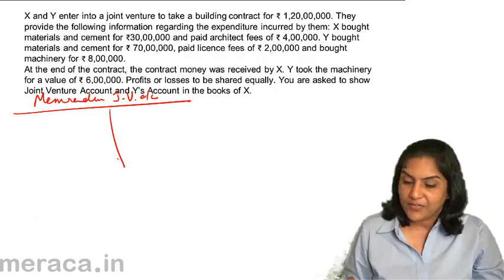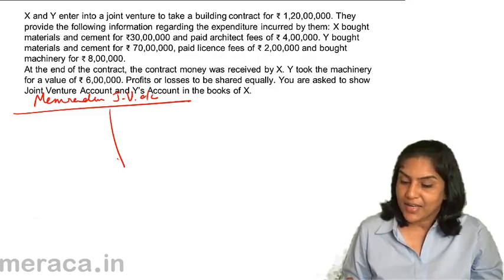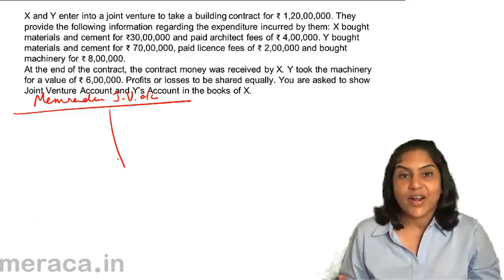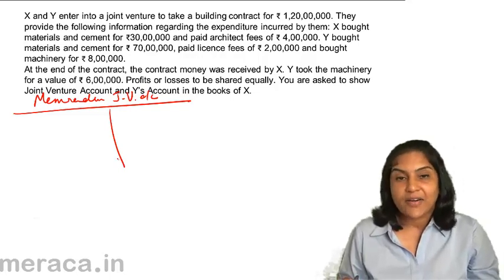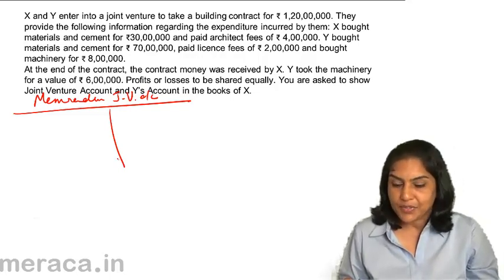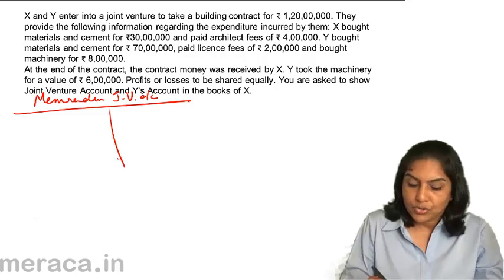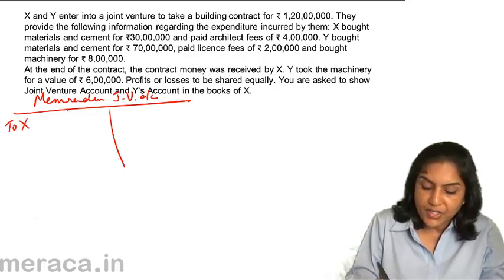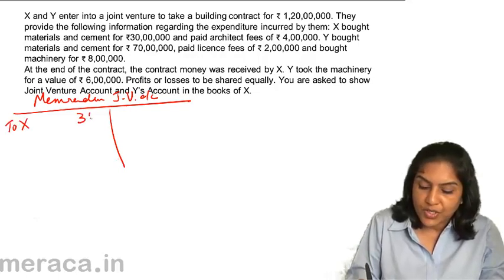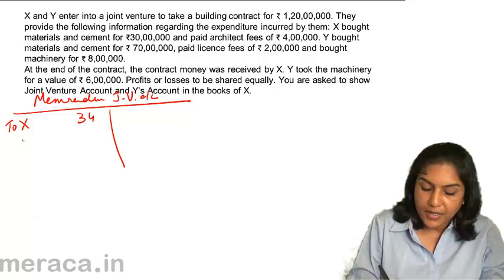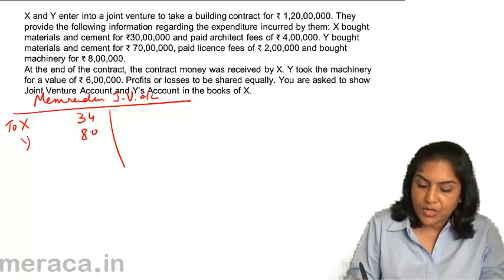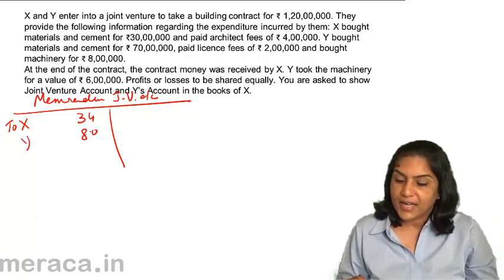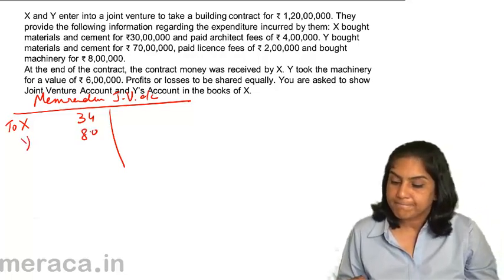In the memorandum joint venture account, on the left side I will write the expenses, and on the right side I will write the incomes. X's expenditure was 34 lakhs and Y's expenditure was 80 lakhs.